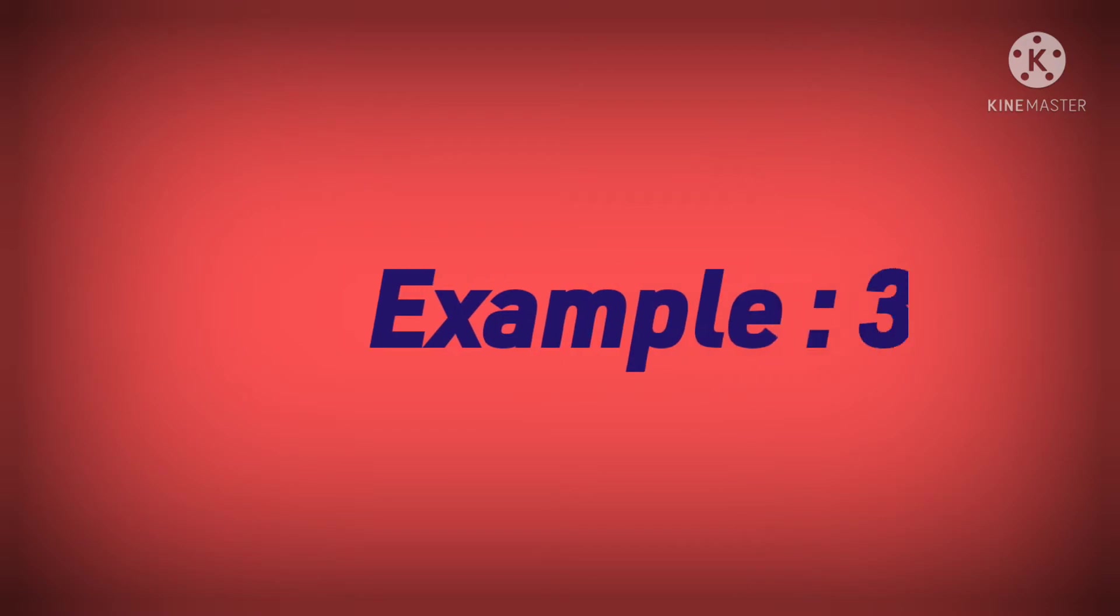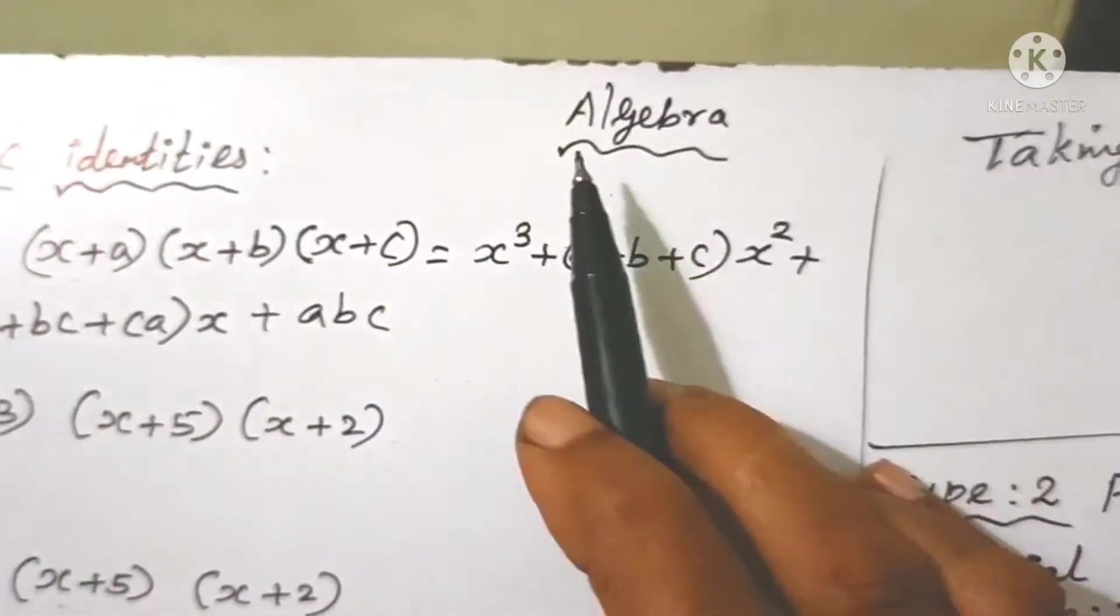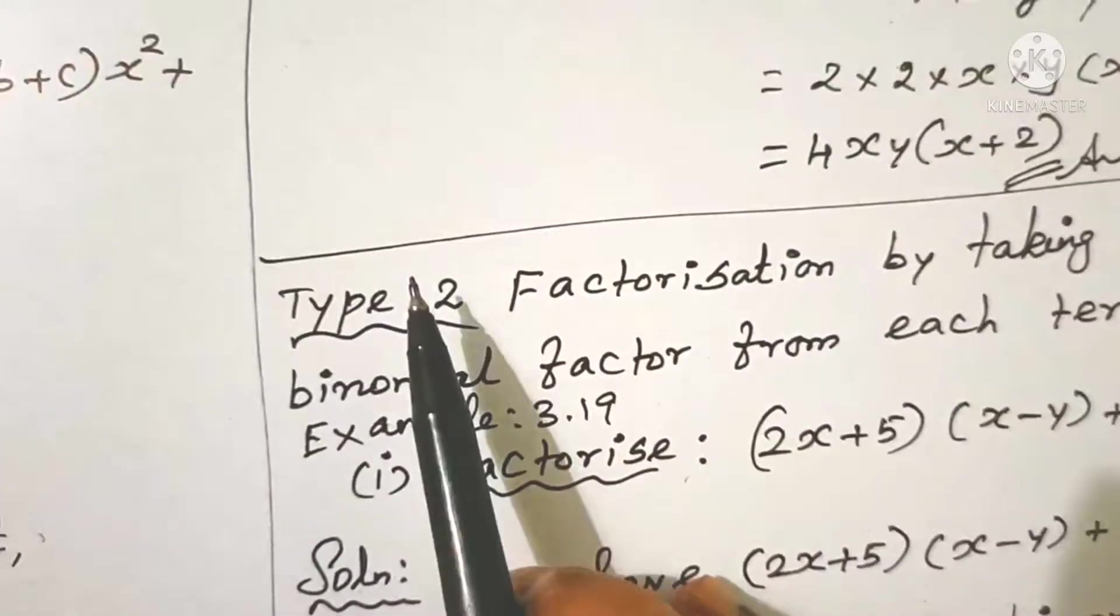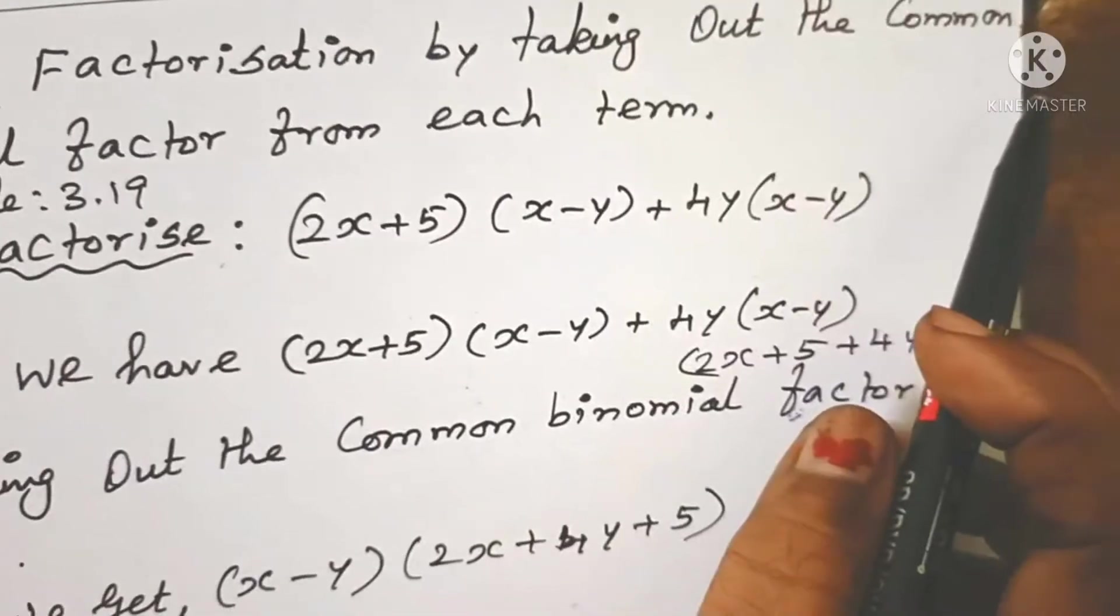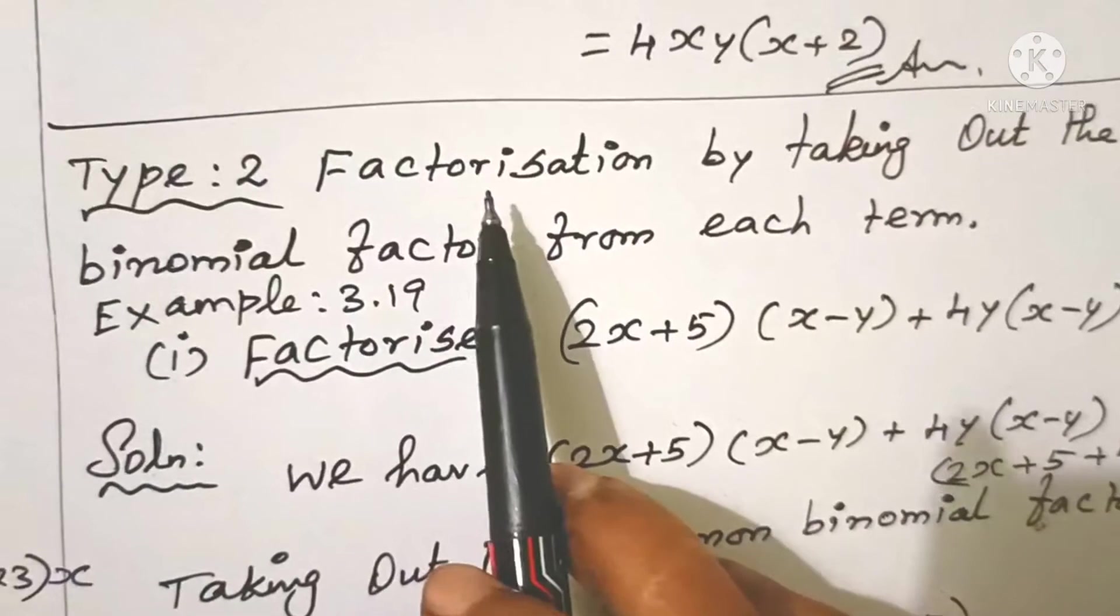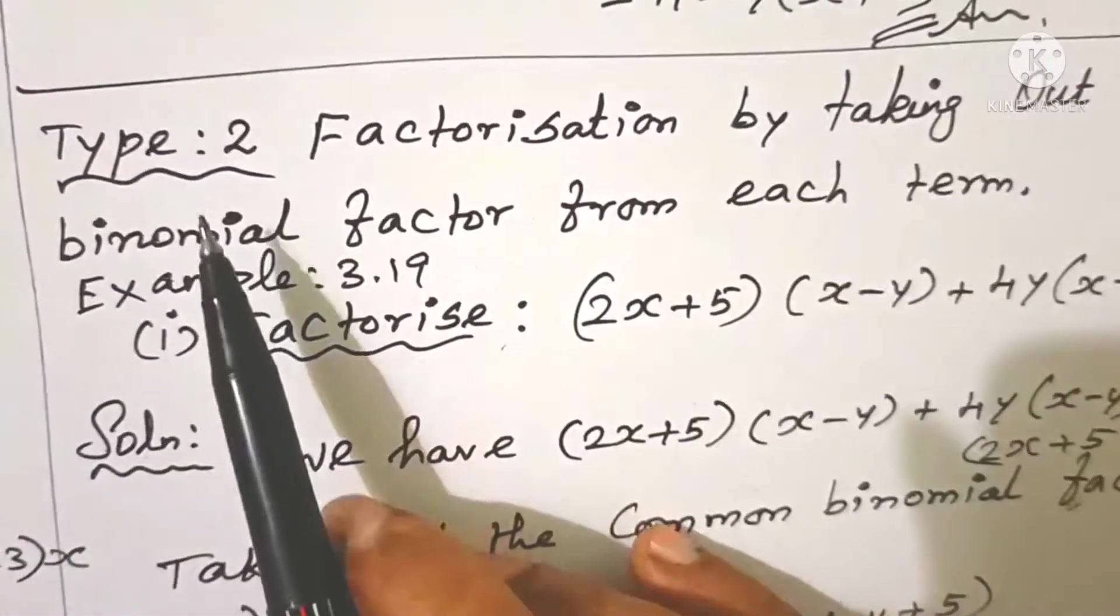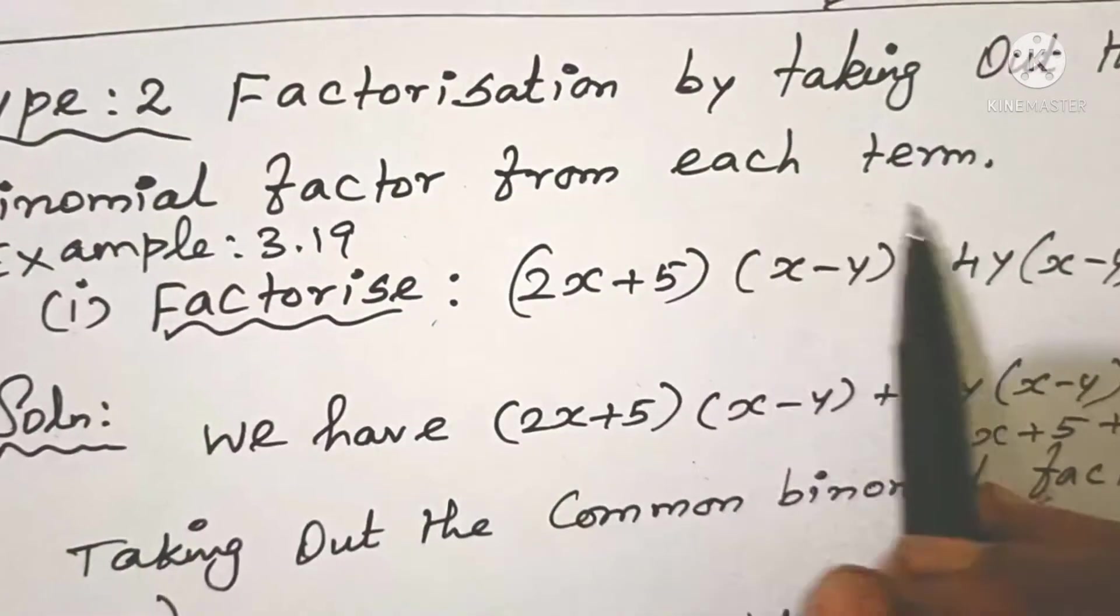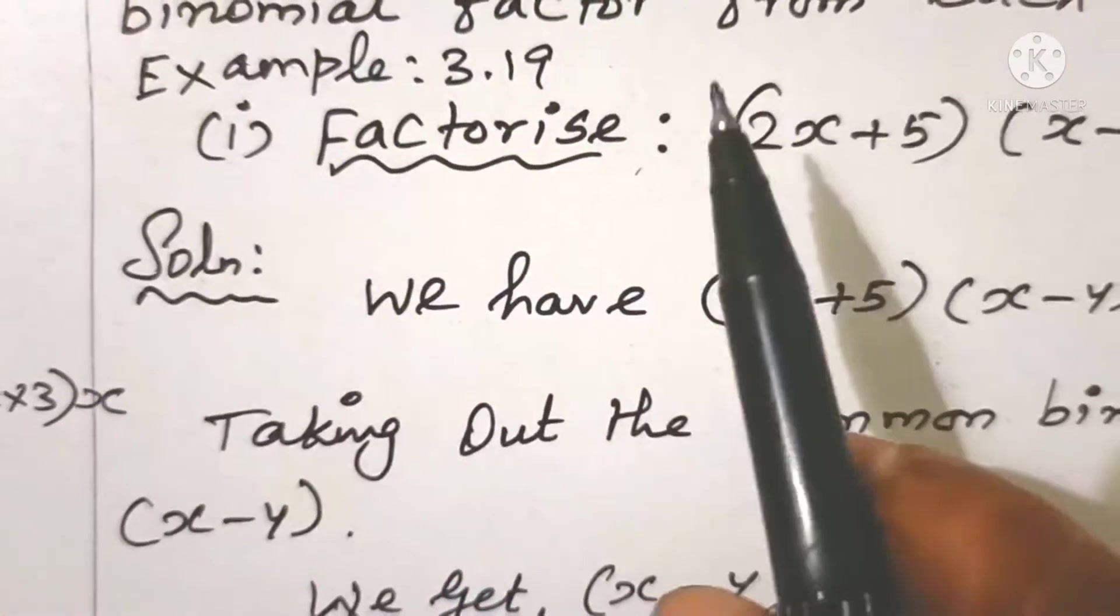Good morning students. Example 3.19: Algebra Type 2, Factorization by taking out the common binomial factor from each term.